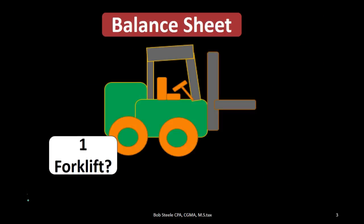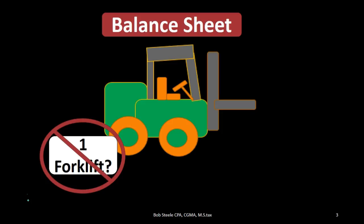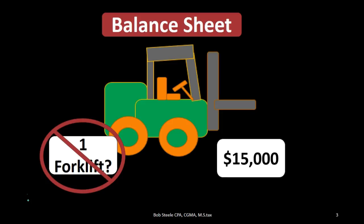The first question is how are we going to record this forklift on the balance sheet? We can't put it on the balance sheet as 'one forklift' — we have to record it in dollars. In this case, we purchased the forklift for $15,000, therefore we're going to put it on the books at $15,000.